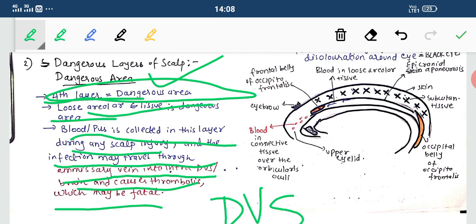The fourth layer has blood and pus collected in that layer during injury. Through the emissary vein in the fourth layer, it travels to the intradural venous sinus, which is part of the brain, and causes thrombosis over there. This thrombosis can lead to death; therefore it is fatal.